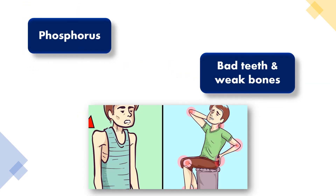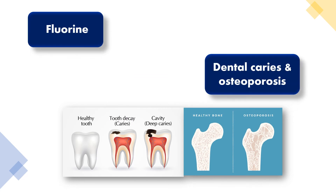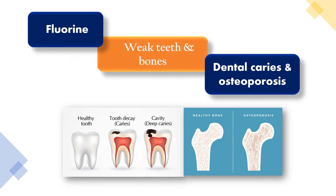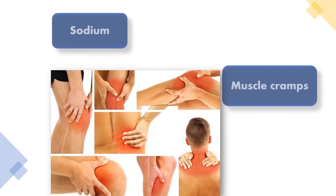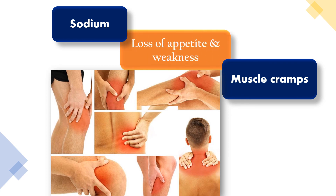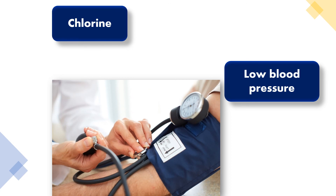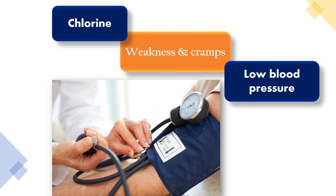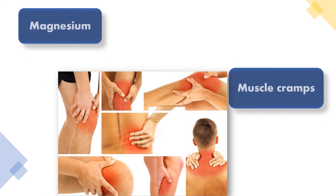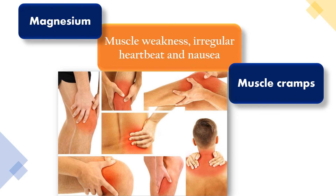Bad teeth and weak bones are caused due to lack of phosphorus; symptom is weakness. Dental caries and osteoporosis are caused due to lack of fluorine; symptoms are weak teeth and bones. Muscle cramps are caused due to lack of sodium; symptoms are loss of appetite and weakness. Low blood pressure is caused due to lack of chlorine; symptoms are weakness and cramps. Muscle cramps caused due to lack of magnesium show symptoms of muscle weakness, irregular heartbeat, and nausea.